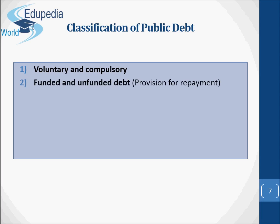Second, funded and unfunded debt, based on provision for repayment. Funded debt is long-term or definite period debt. A proper agreement and terms and conditions of repayment with the percentage of interest payable are declared, and they are used for creation of permanent assets. Unfunded debt is for a short term and for indefinite period, paid through income received from other sources, and used for meeting current needs.